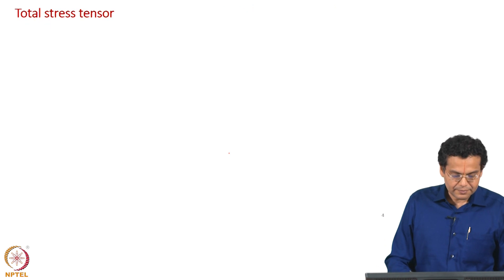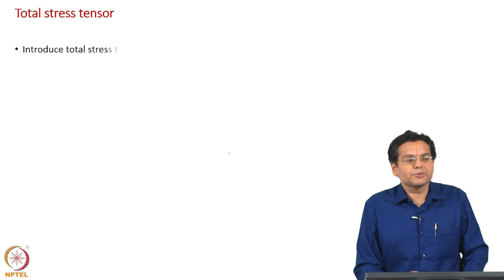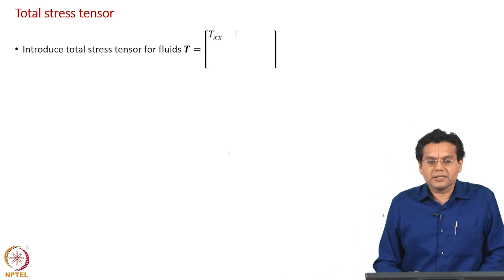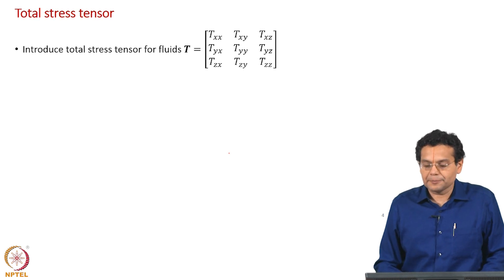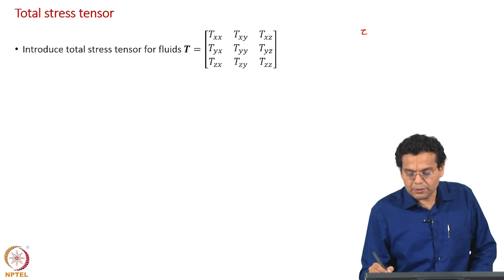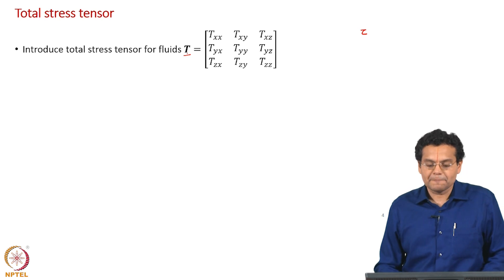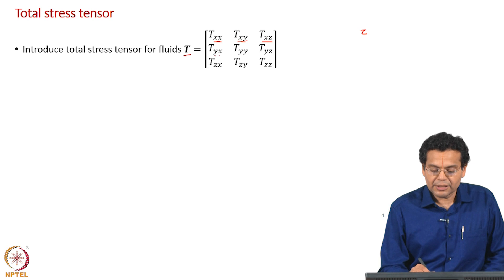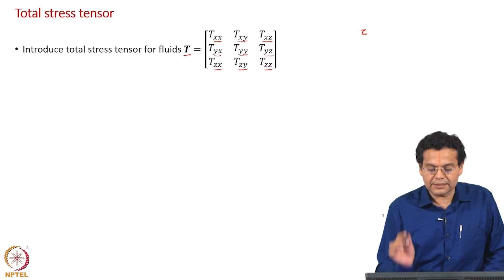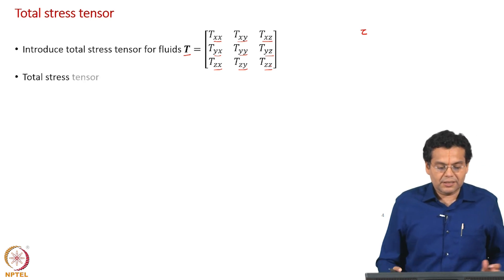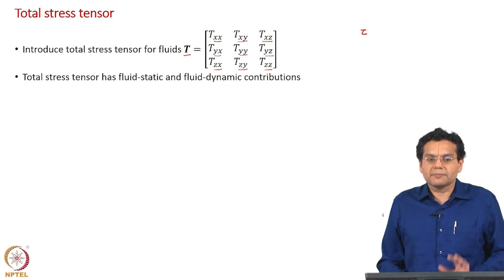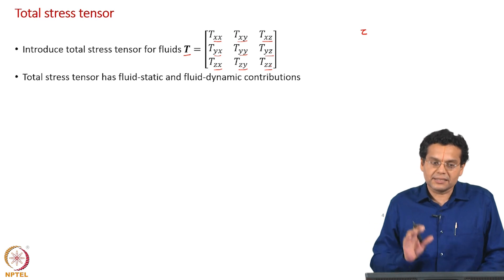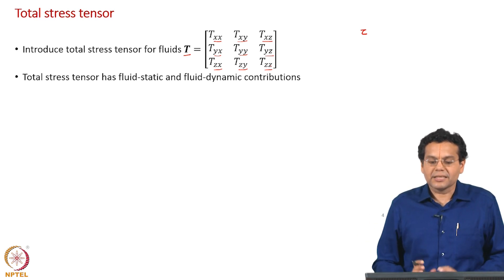I use the word 'introduce' because we have discussed stress tensor for solids. Now for the case of fluids, we introduce another nomenclature: capital T. In the case of solids it was tau; now we introduce capital T as the total stress tensor. If you look at the components they are analogous to the components of tau: T_xx, T_xy, T_xz, T_yx, T_yy, T_yz, T_zx, T_zy, T_zz. Why 'total stress tensor'? When a fluid is stationary, some stresses are acting. When a fluid flows, additional stresses are acting. So you combine both, and that is why we call it total stress.